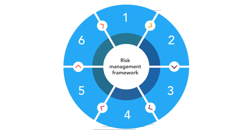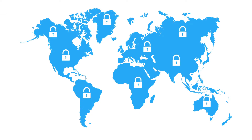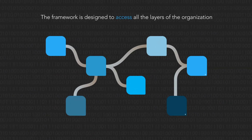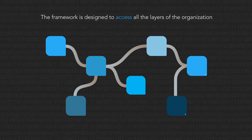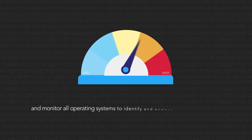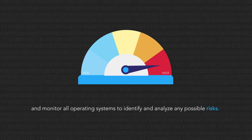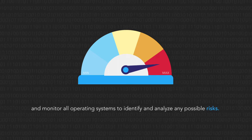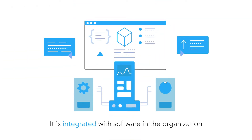The Risk Management Framework is a six-step process created to engineer the best possible data security processes for institutions. The framework is designed to access all the layers of the organization, understand the goals of each project, and monitor all operating systems to identify and analyze any possible risks. It is mostly integrated with software in the organization.